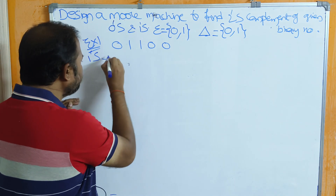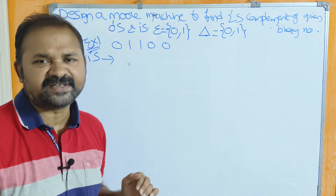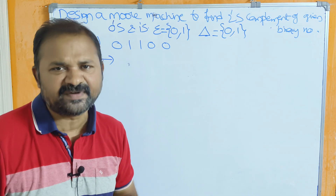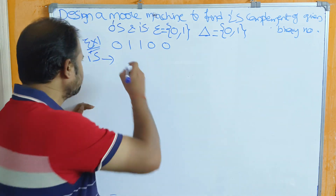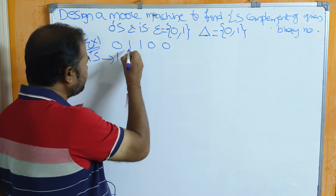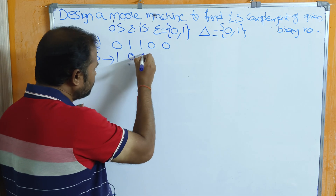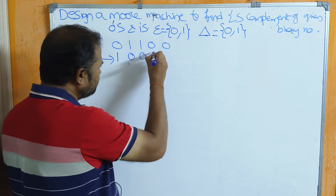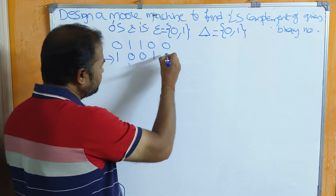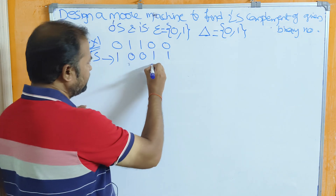1's complement means zeros will be converted to ones and ones will be converted to zeros. So 0→1, 1→0, 1→0, 0→1, 0→1. The 1's complement of 01100 is 10011.